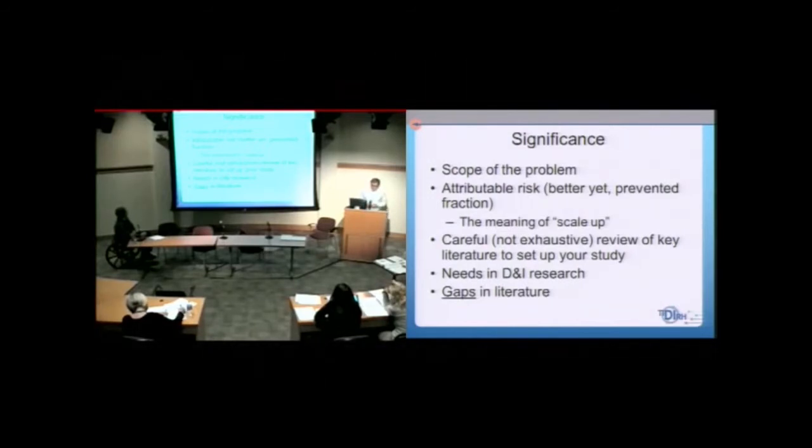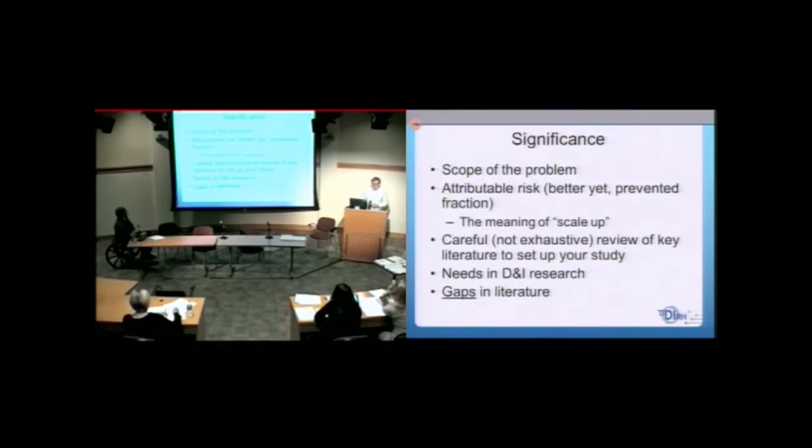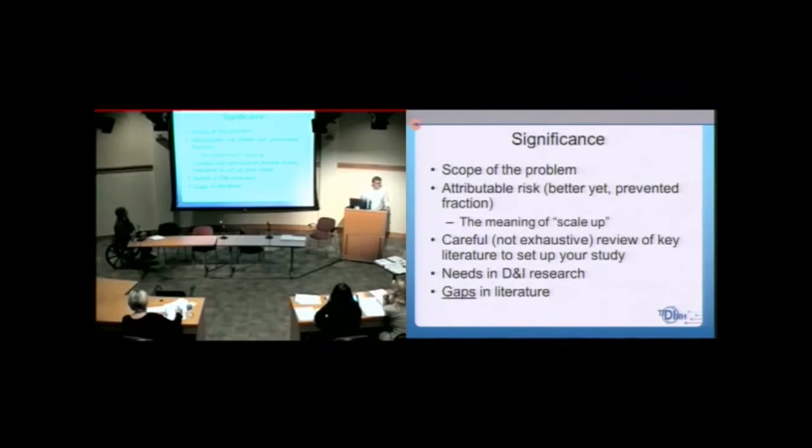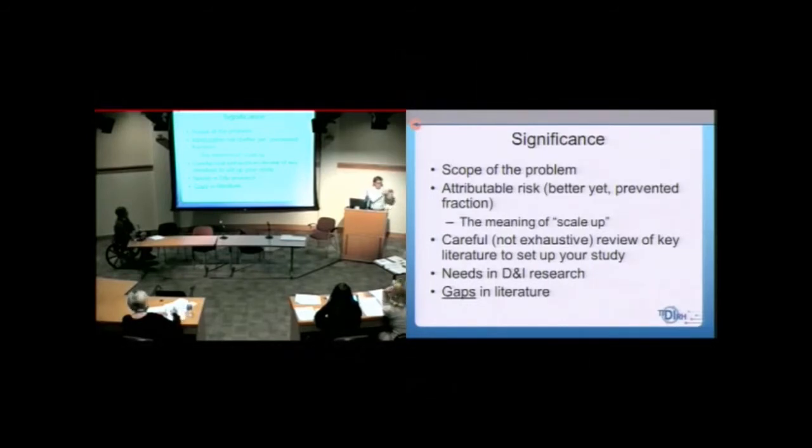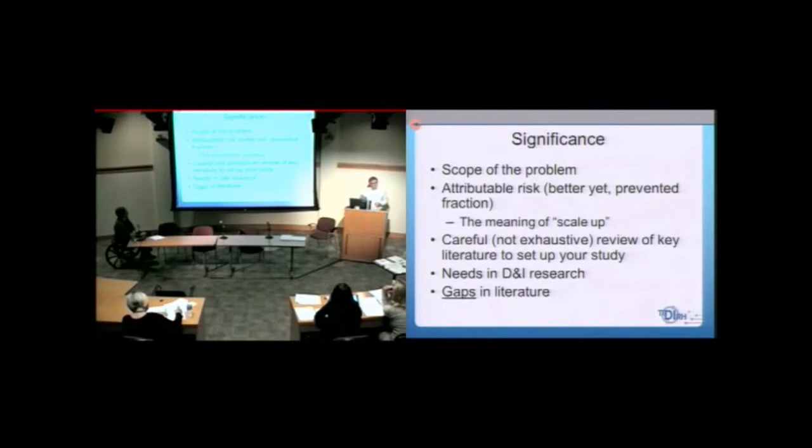In my experience, the third bullet point about review of the literature is where people get really hung up. You want to show you know the key studies, the classic studies, and probably recent studies. But I've seen so many people either waste six months trying to think they know every study that's been done, then they throw their hands up if a new one's been published or something. You don't have the space for that. That's not what this is. This is not an exhaustive, systematic review.